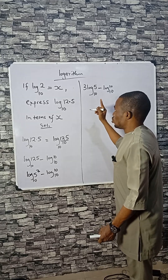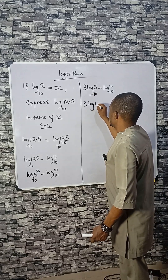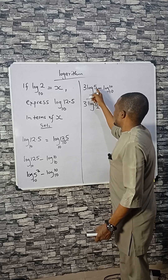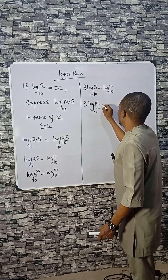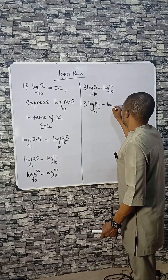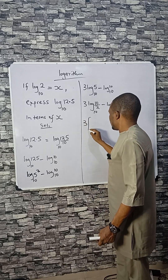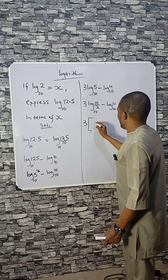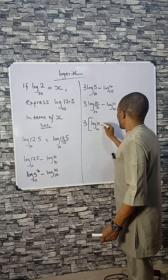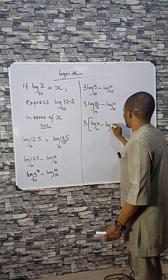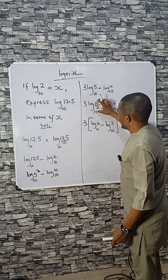We're looking for log 2. Since 5 can be expressed as 10 divided by 2, we replace 5 with 10/2. So we have 3 log(10/2) base 10 minus log 10 base 10. Applying the subtraction rule again: log 10 base 10 minus log 2 base 10, all inside the bracket.